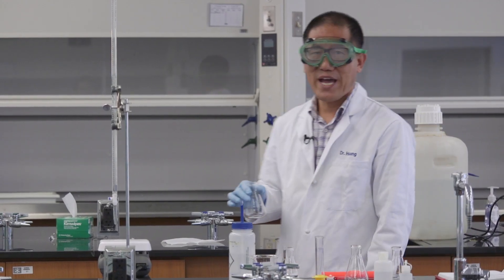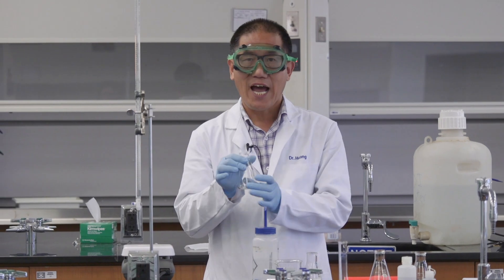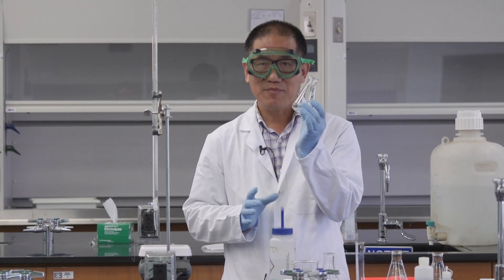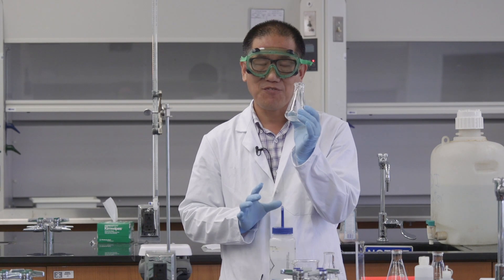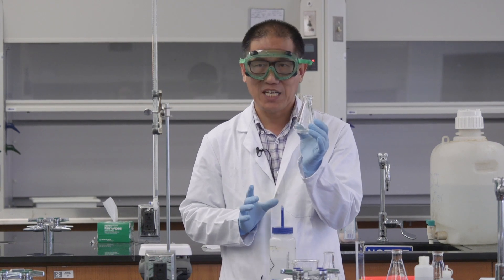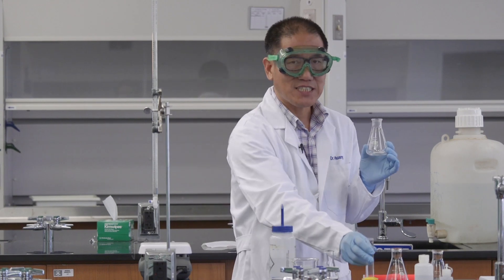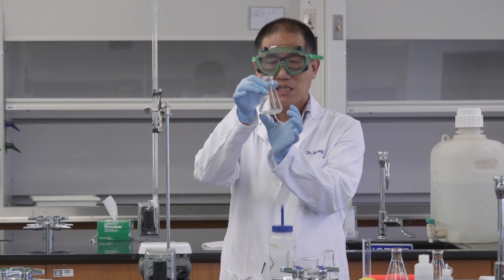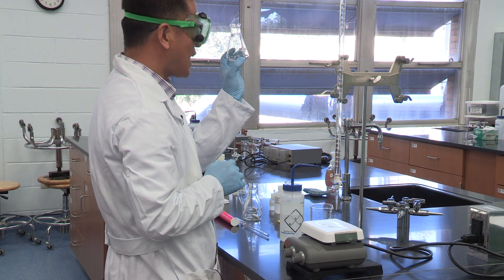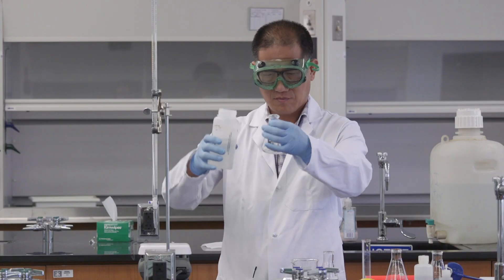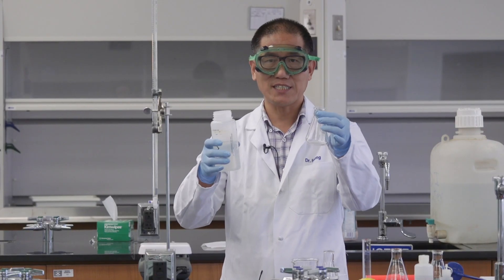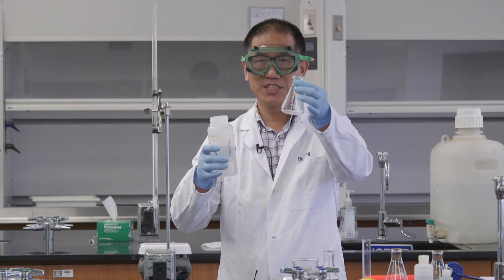Now we are moving back to our titration station. I need to add water to dissolve this. It doesn't matter how much water you add, but roughly you want about 25 milliliters. You can use a graduated cylinder or you just estimate. Use a mark on this Erlenmeyer flask. I'm not going to use a graduated cylinder because I think I have a pretty good estimate.